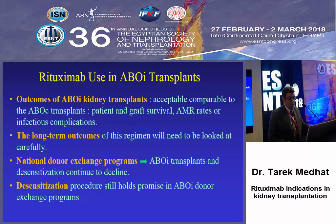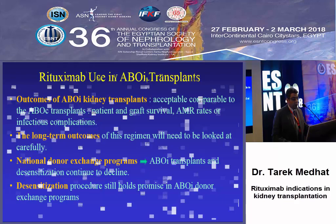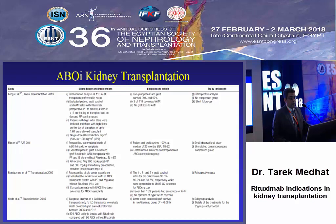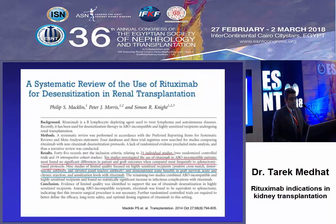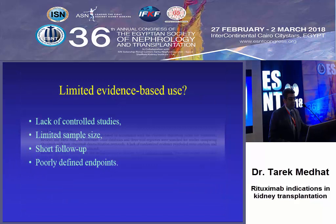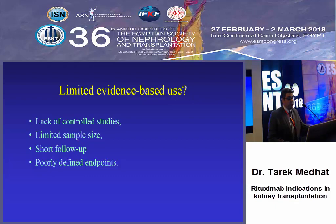However, long-term outcomes need to be studied in more detail, and the presence of national donor exchange programs causes a decline in desensitization protocols. These are some of the many studies done for ABO-incompatible kidney transplantation. A systematic review published in 2014 collecting 21 studies, 10 of them for ABO-incompatible transplantation, shows it is effective as the previous invasive splenectomy, but evidence still needs more study. Limitations include limited sample size, short follow-up, and poorly defined endpoints.